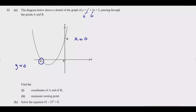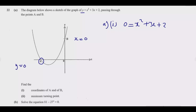At point A, y = 0, so we substitute zero for y in the equation. This gives us: 0 = x² + 3x + 2. This is a quadratic equation which will give us two values of x. We are interested in point A, so we solve: x² + 3x + 2 = 0. We look for two factors whose product is 1 × 2 = 2.